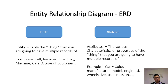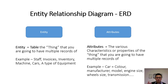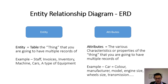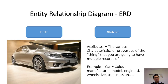Next are the attributes. What are the various characteristics or properties of the thing that you're going to keep records of? You'll potentially have multiple attributes. The table has multiple attributes or types of characteristics to apply or track. For example, a car has many colors — which is an attribute. You might have a fleet of cars with different manufacturers — another attribute.